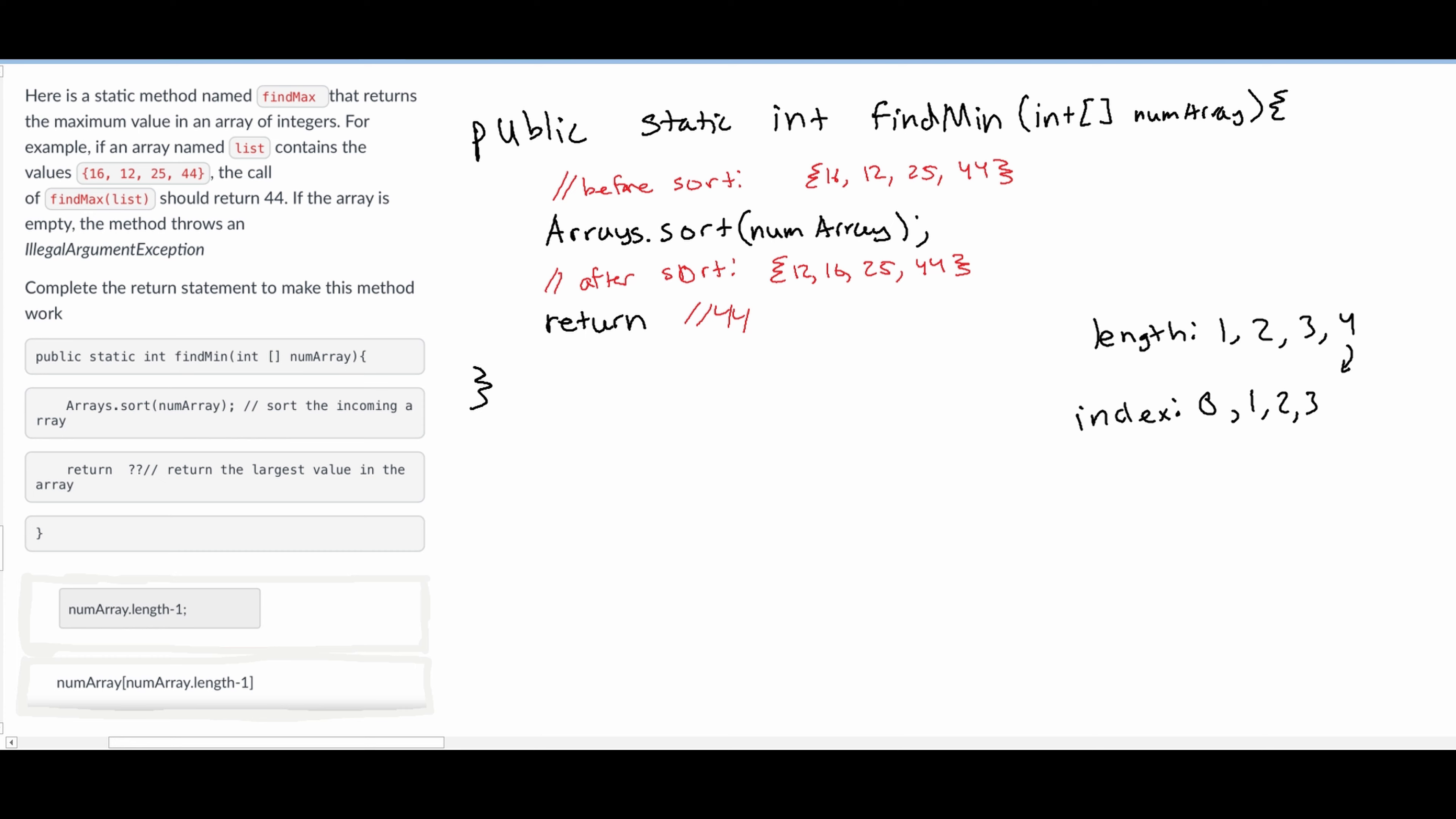So index 3 is going to be length minus 1, and that's exactly what we're going to use. Length minus 1 to get this index.